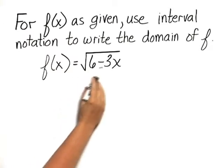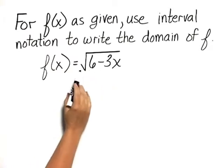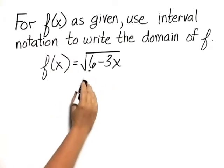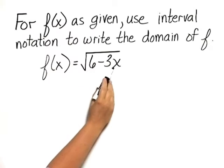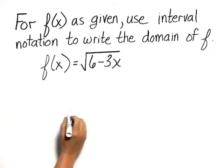When we have the square root of an expression, the numbers that will not be in the domain are the numbers that are less than 0, that make this expression less than 0.